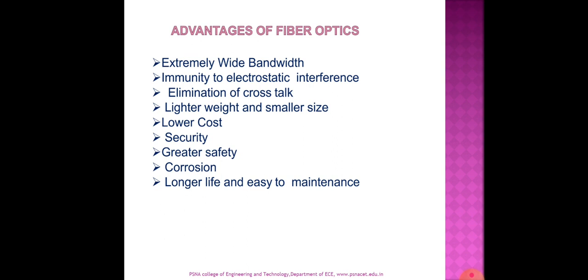The third advantage is elimination of crosstalk. Fiber systems are immune to crosstalk between cables caused by magnetic induction, whereas in metallic cable, crosstalk results from electromagnetic coupling between two adjacent wires. Additionally, optical fibers are lighter in weight and smaller in size, making them the ideal transmission medium for ships, aircraft, and high-rise buildings where bulky copper cables occupy too much space. Reduction in size also means reduction in weight.